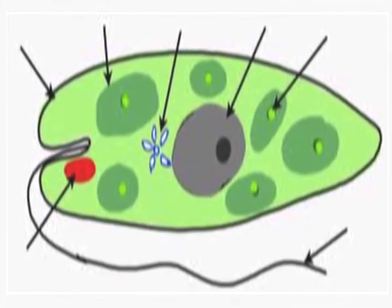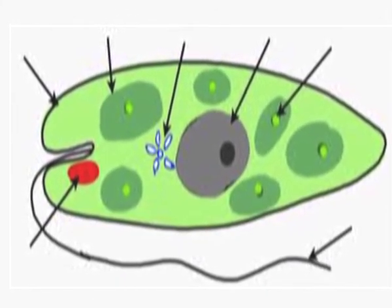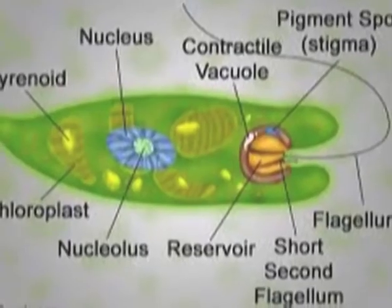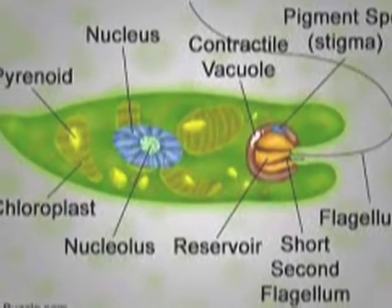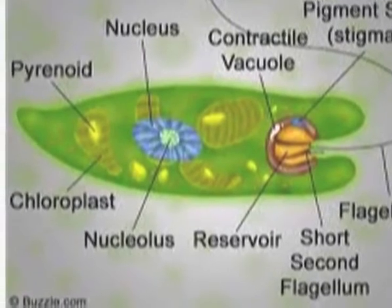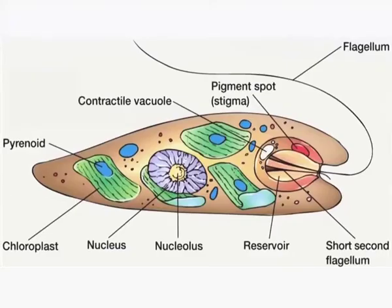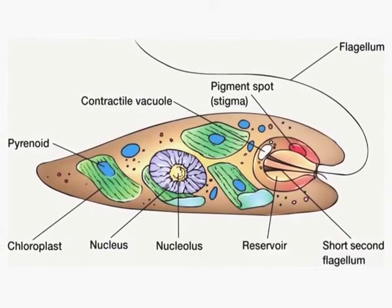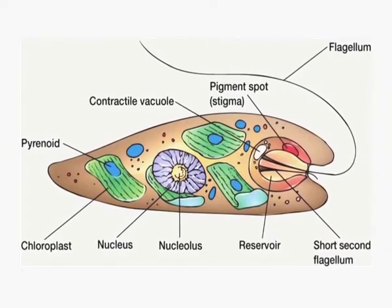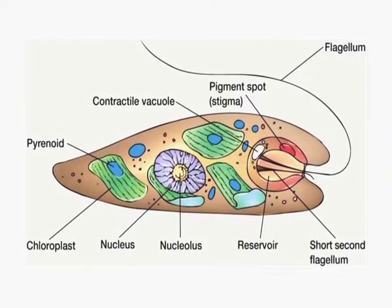Euglena has a whip-like flagella, similar to that seen in Monerans. However, there is a tremendous difference between the structure of the Moneran flagella and the eukaryotic flagella. Both have flagella for movement, but the structure is different in both.